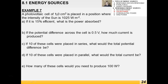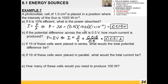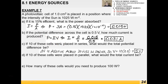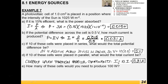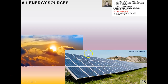Past paper example: a photovoltaic cell of 1 cm² at 15% efficiency with 100 W/m² incident gives 0.015 watts. With a potential difference of 0.5 V, using P = IV gives the current. If 10 cells are in series, the total potential difference is 0.5 × 10 = 5 V. If 10 cells are in parallel, the total current is 0.31 A. To produce 100 watts, you need 6451 cells.